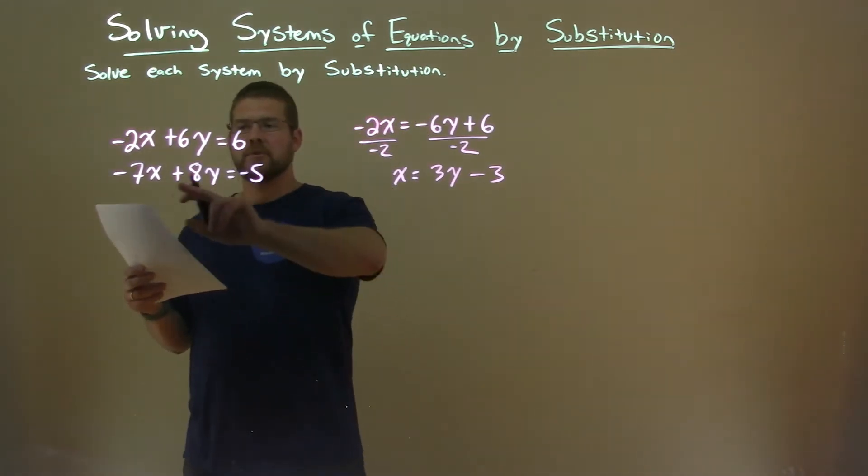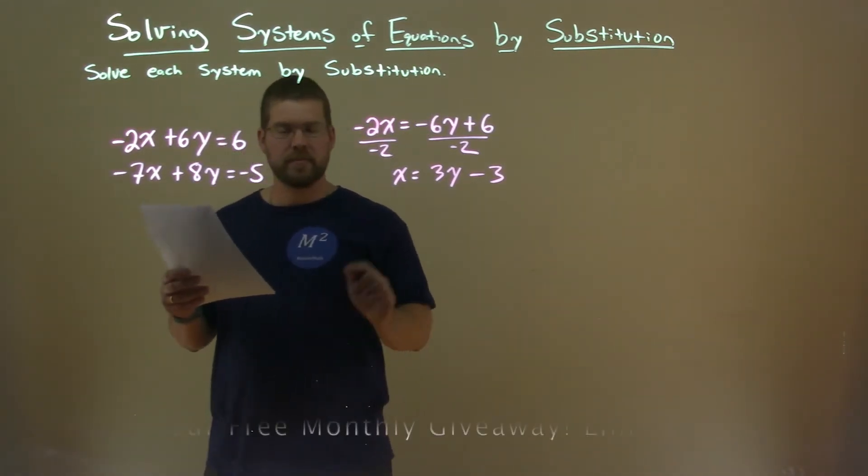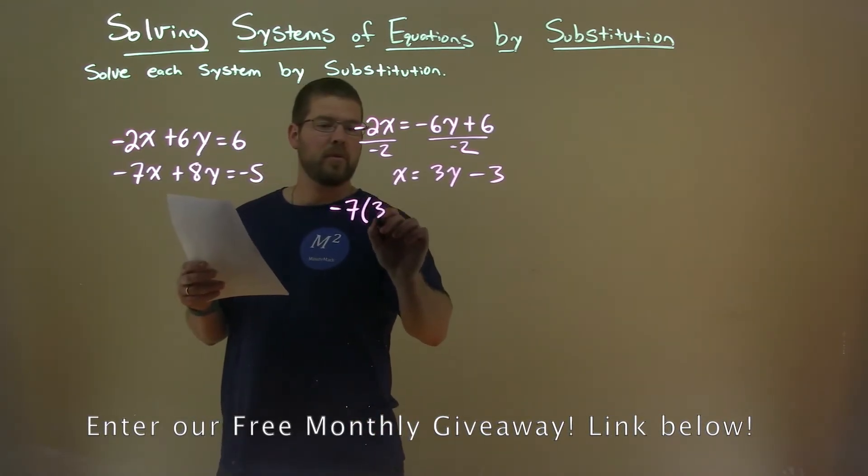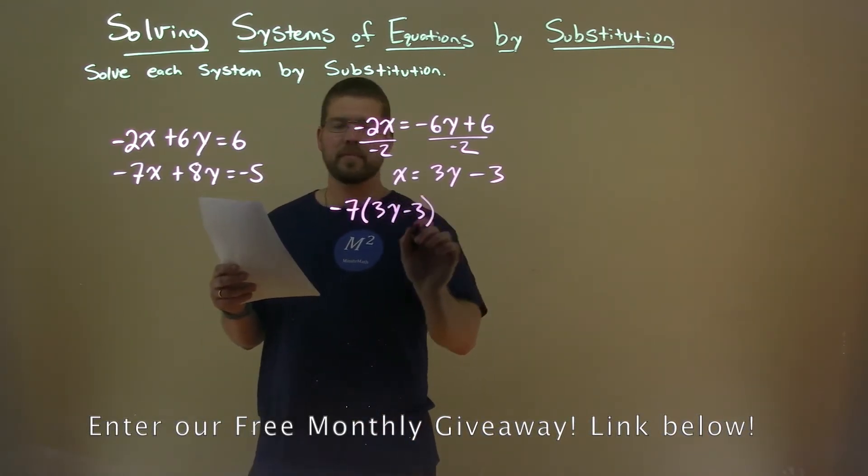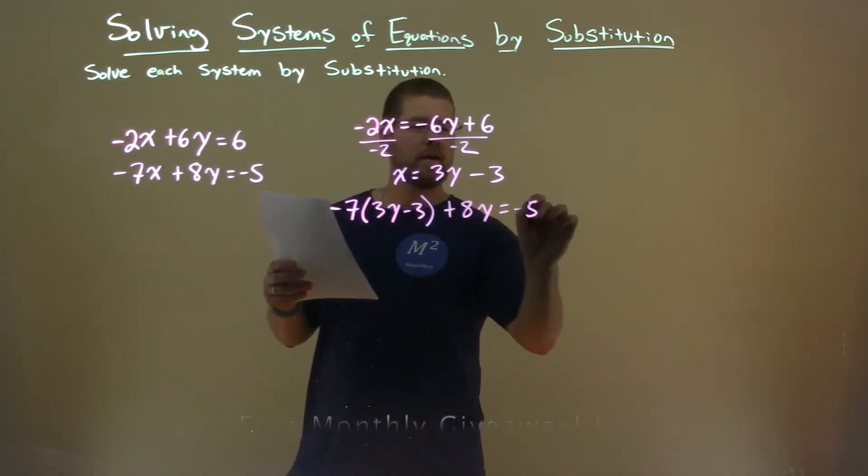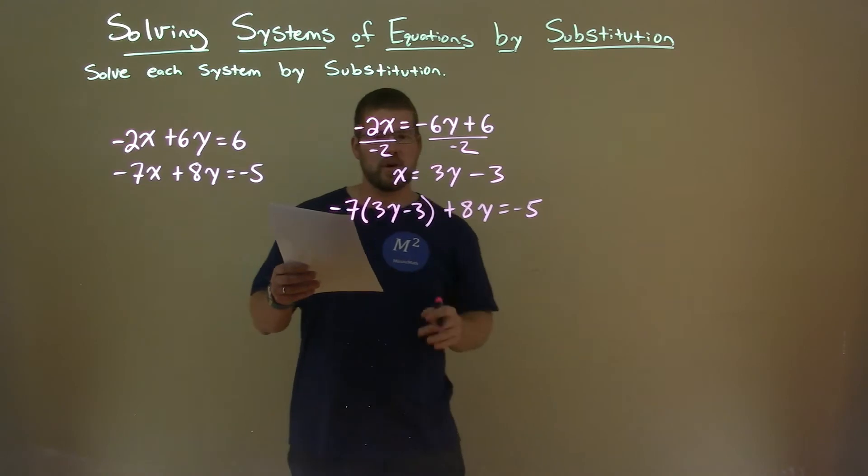And we need to plug that value into our second equation's x value. So negative 7, but instead of x, I'm putting in 3y minus 3. Then plus 8y equals negative 5. And now we need to solve for y.